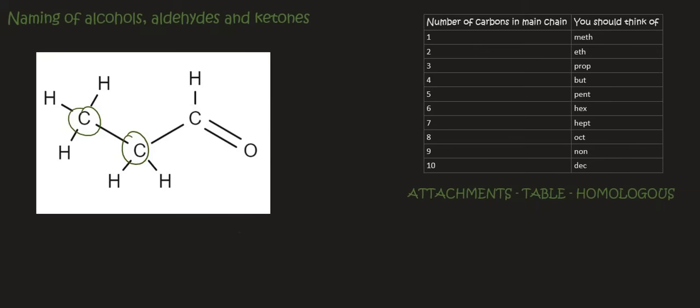So here is a 3 carbon chain. So that's going to be prop. But then we see that there's a carbon double bond oxygen on the side. So that's an aldehyde. So then we have to say propan. And then we don't say 1. Why?